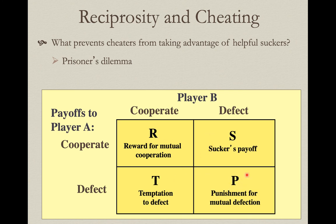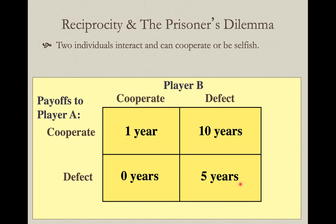Putting numbers to the prisoner's dilemma: the police pick up two suspects from a robbery and interrogate them in separate rooms. They tell each of them: if you squeal on your partner and give enough evidence, you'll get a deal — maybe just probation instead of jail. So this defector gets no jail time. But if player A cooperates and doesn't defect while player B squeals, player A goes to prison for maybe 10 years.